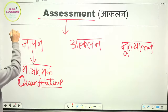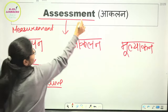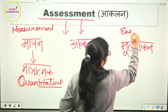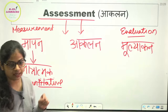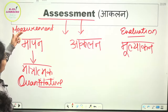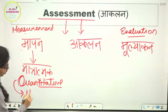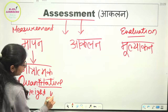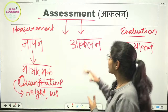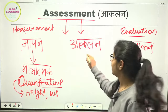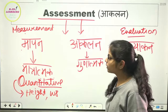Now, Maapan means Measurement. Aaklan means Assessment. And Muliankan means Evaluation. Maapan is quantitative — for example, we can measure our height, we can measure our weight — we can see numerically what the quantity is. That is Maapan.